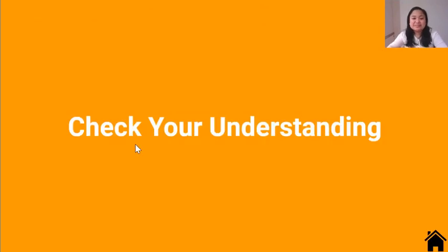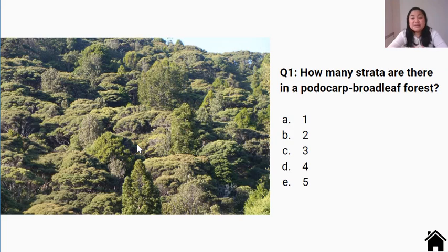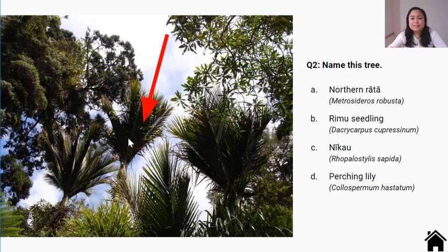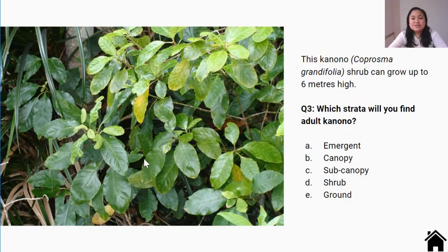Let's check your understanding. Question one: How many strata or layers are there in a podocarp broadleaf forest? A. One, B. Two, C. Three, D. Four, E. Five. Question two: Name this tree. A. Northern Rata, B. Rimu seedling, C. Niko, D. Perching lily. Question three: This Kanono shrub can grow up to six meters high. Which strata will you find this adult Kanono? A. Emergent, B. Canopy, C. Subcanopy, D. Shrub, E. Ground.